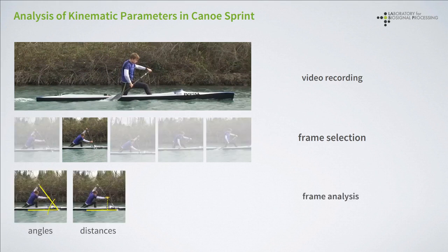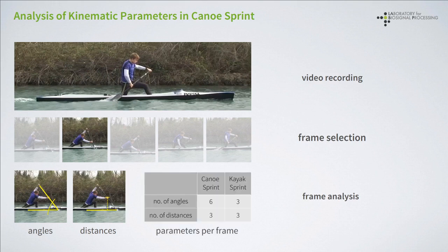Each selected frame is then analyzed separately. This analysis comprises the measurement of a number of different angles as well as a number of different distances. The actual number of parameters depends on the particular discipline — a total of six angles and three distances for canoesprint, and three angles and three distances in kayak sprint.